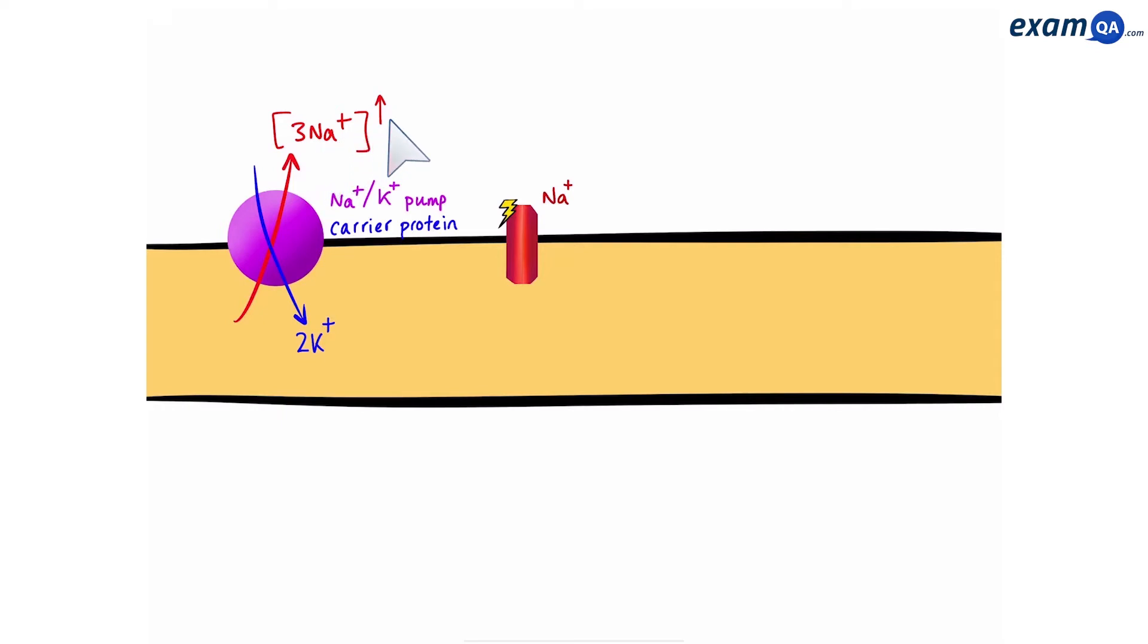Looking at the potassium, we have a similar story. The potassium is building up inside the neuron. It will try to diffuse out. Now, fortunately for potassium, the potassium channels are open. So, that means potassium will be able to diffuse out of the neuron. This means that the amount of potassium inside and outside will eventually balance. Because remember, diffusion always balances stuff.